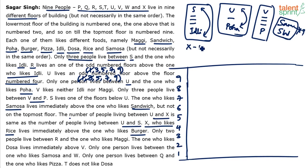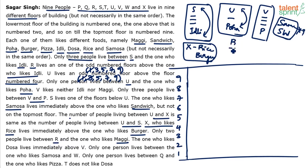X likes rice and lives immediately above the one who likes burger, so X is immediately above burger. Only two people live between R and the one who likes maggie, so R — — maggie, and these two positions can interchange.